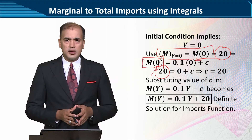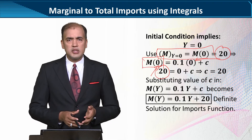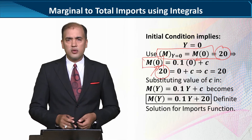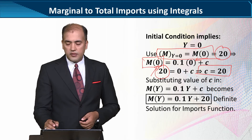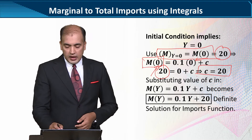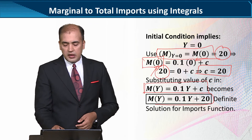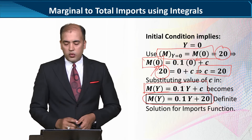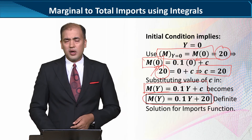We have substituted the initial condition, which is a standard procedure. Finally, we got the value of C, and that was equal to 20. After finding this, we can easily substitute it back, and with that we get the imports function now in a definite form — there is no arbitrariness in it.